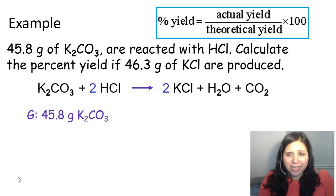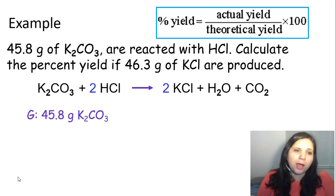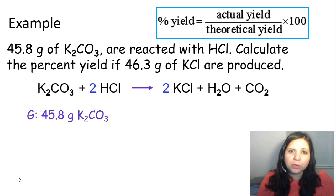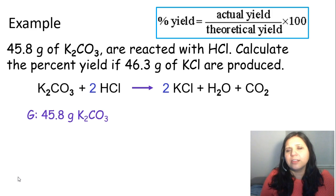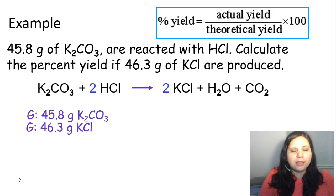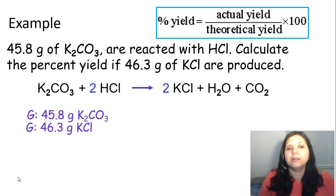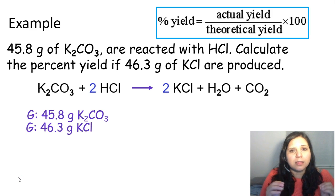We're given a lot of information — some about a reactant and some about a product. We have 45.8 grams of potassium carbonate; looking at the balanced equation, this is on the left side, it's a reactant, so it doesn't go into the percent yield calculation directly — it hasn't been produced. We also have 46.3 grams of potassium chloride, which is a product, so this is our actual yield.